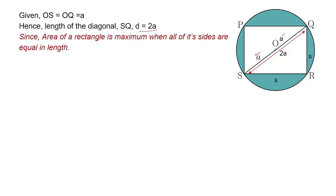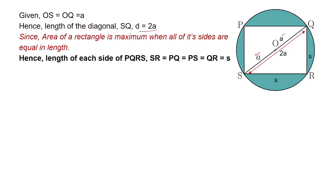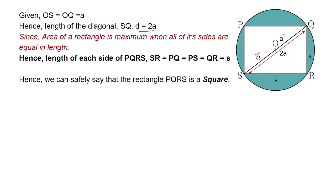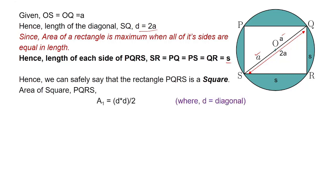We know that the area of a rectangle is maximum when all of its sides are equal in length. So each side of rectangle PQRS — that is, PQ, QR, RS, and SP — are all equal in length. This means rectangle PQRS is actually a square, and its area = d²/2, where d is the diagonal.